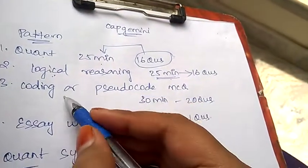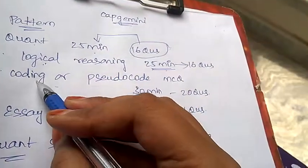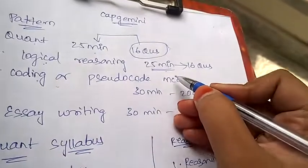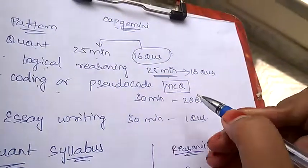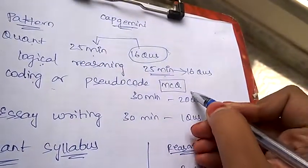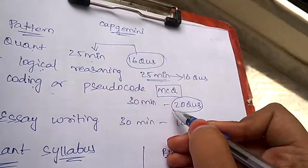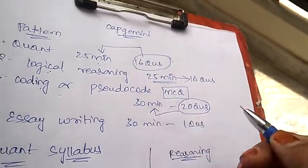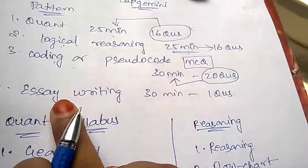Last but not least, they may ask you questions on coding or pseudocode. They are just multiple choice questions. There will be 20 questions where you'll be given 30 minutes.